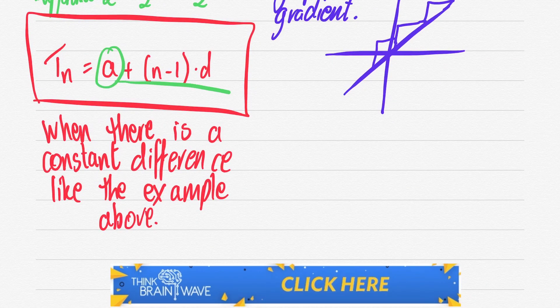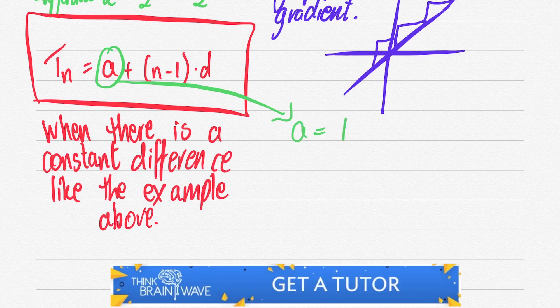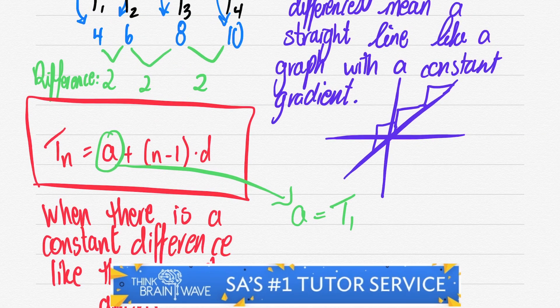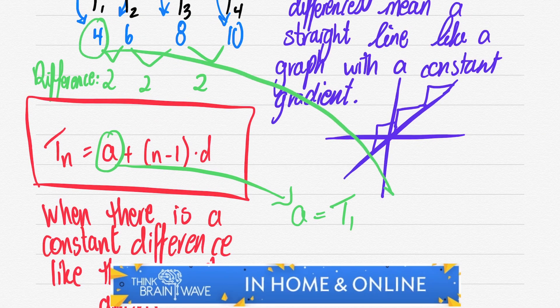So our a value is our first term. Our first term is t1 and in this case it is 4.